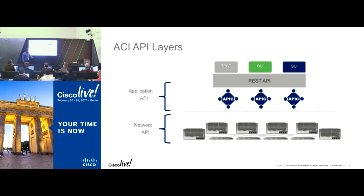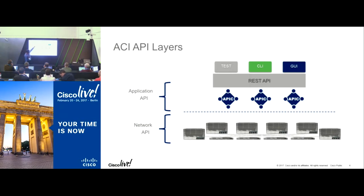These APIs are sent to the controller. The controller guarantees that whatever you program in your network is consistent across your entire fabric. Because of that, we have two sets of APIs. First are read APIs, where you can extract information from the fabric. Second are write APIs, where you write into the controller — not directly into the fabric — so we maintain consistency and prevent any rogue player from logging into one switch and messing everything up.